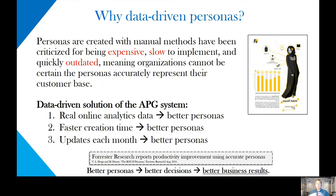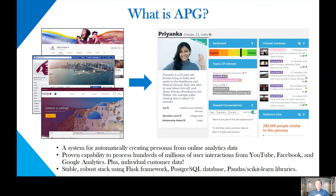The idea is we have better personas, better decisions, and better results. We are certainly persona advocates — that they are beneficial to organizations. Our data-driven persona system is APG, Automatic Persona Generation. We take web analytics, website data, and also customer relations data in large quantities — tens of millions — and automatically generate personas from them.